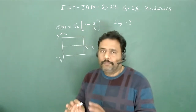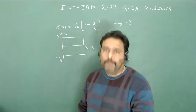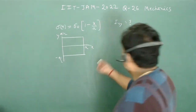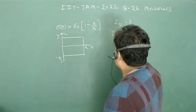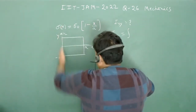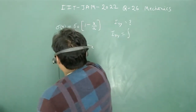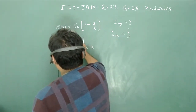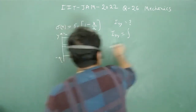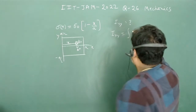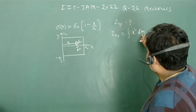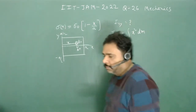We have to write the moment of inertia in terms of mass M, the mass of this particular lamina. To calculate I_yy, the perpendicular distance from the y-axis is x. So we take a small element with dimensions dx and dy having mass dm. The moment of inertia contribution is x² dm, where dm is the mass of this rectangular element.